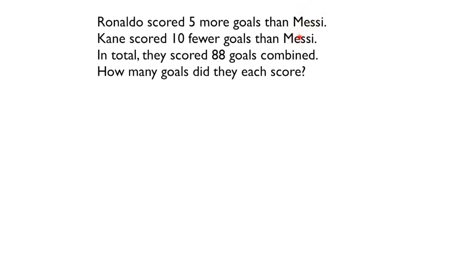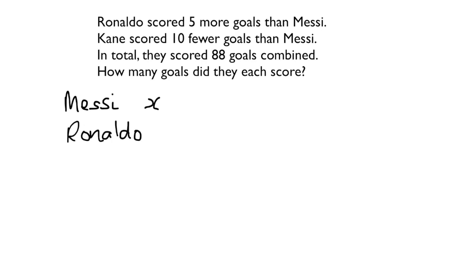I'm going to give Messi the letter X. Then the next thing I need to do is to give the other two — Ronaldo and Kane — an expression for how they compare to Messi. So if Messi is X and Ronaldo scored five more goals than Messi, then Ronaldo's expression is X plus 5. And for Kane, he scored 10 fewer than Messi, so his expression is X minus 10.